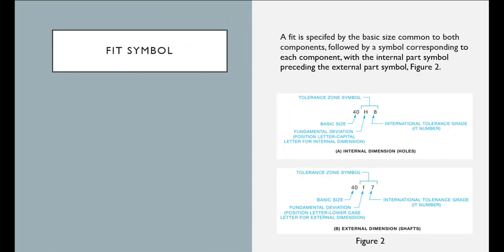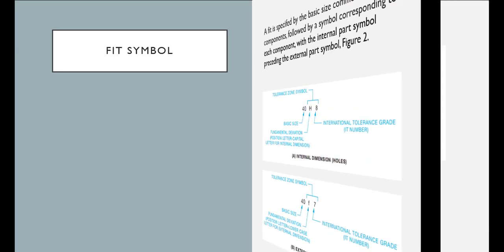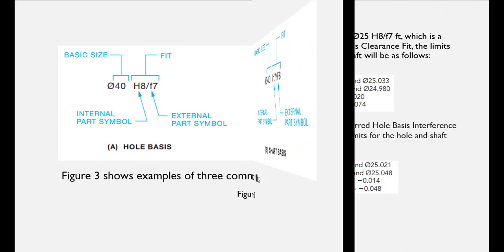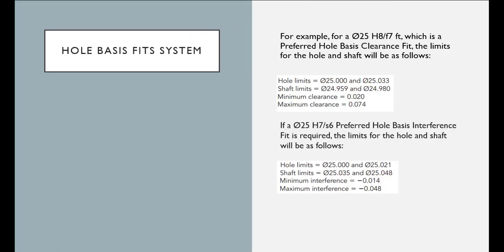This number determines the basic size; others show the deviation of the tolerance, and the last number shows the tolerance grade. We can define the tolerances of work parts based on their working condition — the desired clearances and interferences in the fit.